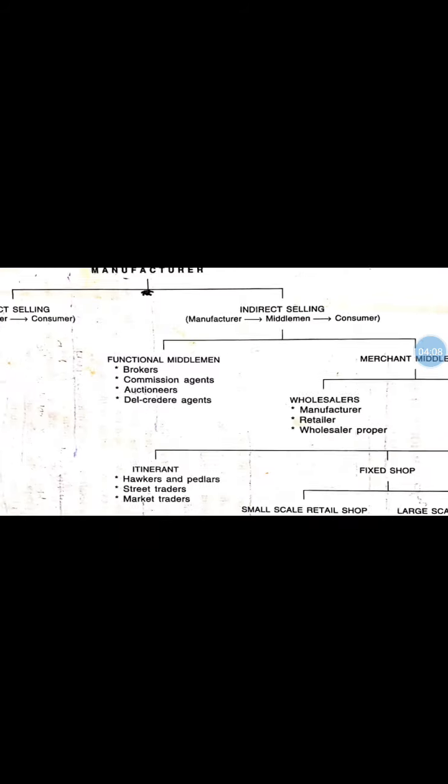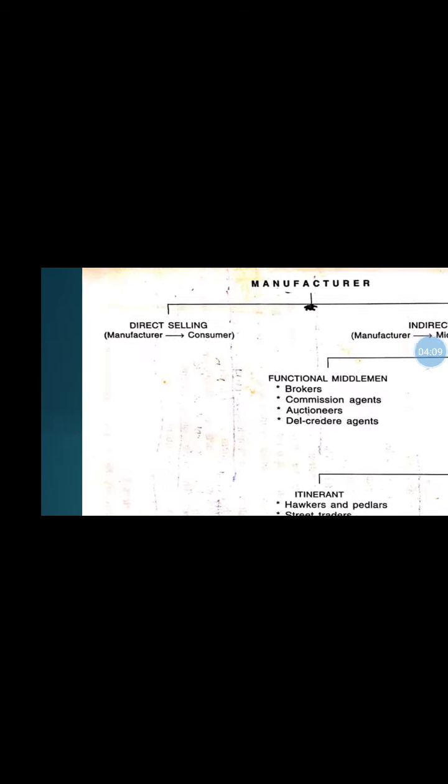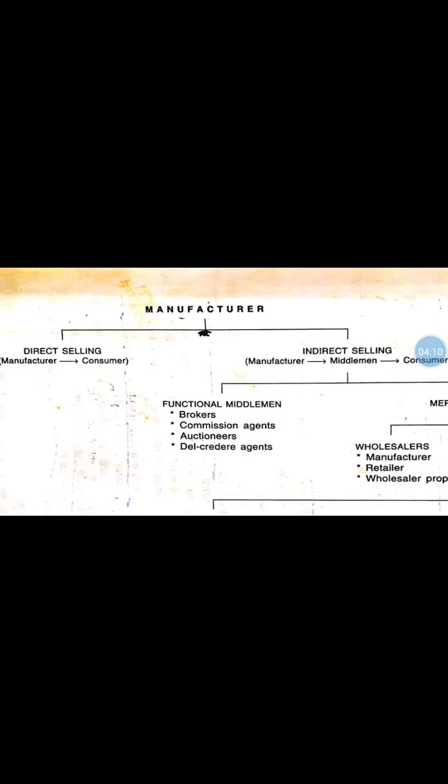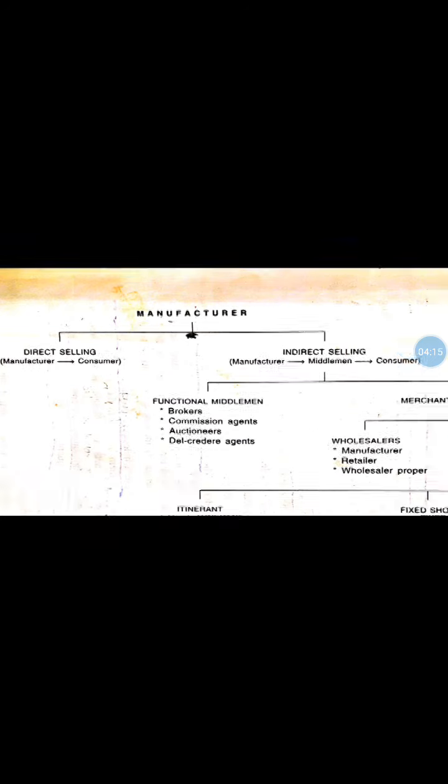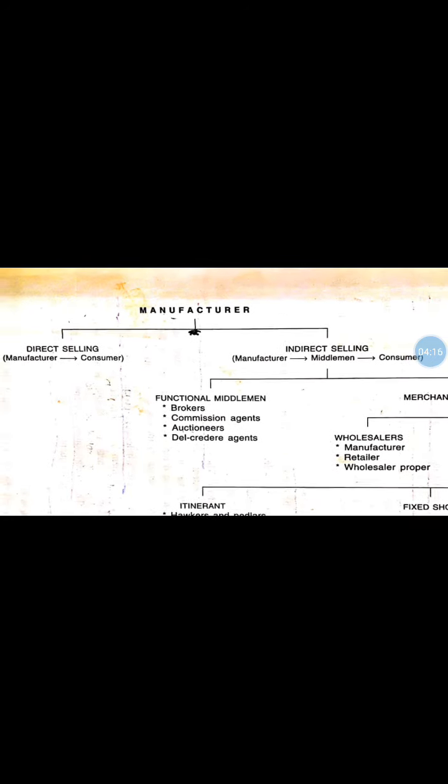Next is the classification of channels of distribution. Channels of distribution are classified into two types: direct selling and indirect selling. Direct selling is studied first, then indirect selling, which includes middlemen. These middlemen are classified into two types: functional middlemen and merchant middlemen.